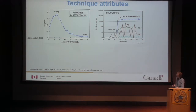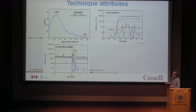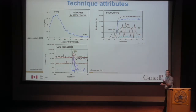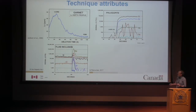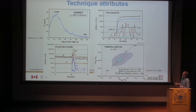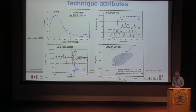We can also use it for fluid inclusion analysis. We can open single fluid inclusions and get very short transient signals — just a second or two — but get nice signals from the fluid inclusions. And because we're using a mass spectrometer, we can do things like uranium-lead dating, achieving accuracies and precisions of a few percent.